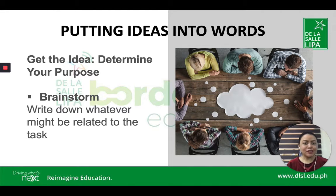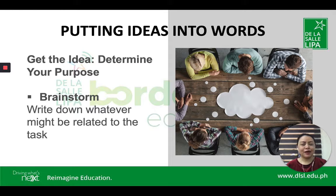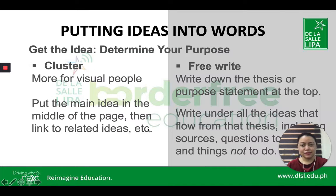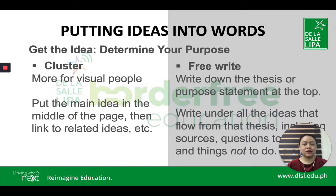To start, you need to brainstorm. When writing, you can first create an outline — whether using Roman numerals, just bullets, or jotting down on a piece of paper. You can also do a concept map or write down whatever comes to your mind. For visual people, you can do clustering — put the main idea in the middle of the page and then link related ideas using arrows, lines, or shapes.